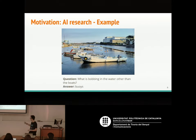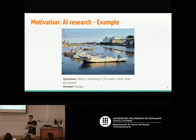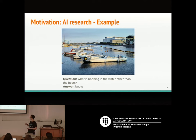To see that with an example — this is a real example from the dataset we are using. The question is: 'What is bobbing in the water other than the boats?' And the answer is 'buoys.' To have a model able to answer this, it first needs to recognize what is the water, what are the boats, and what is their relationship in the image — 'bobbing.' It has to find those objects and subtract them to find the other object bobbing in the water. So it also needs to recognize object 'buoys.' This shows the many sub-problems like object recognition and deep question understanding involved.